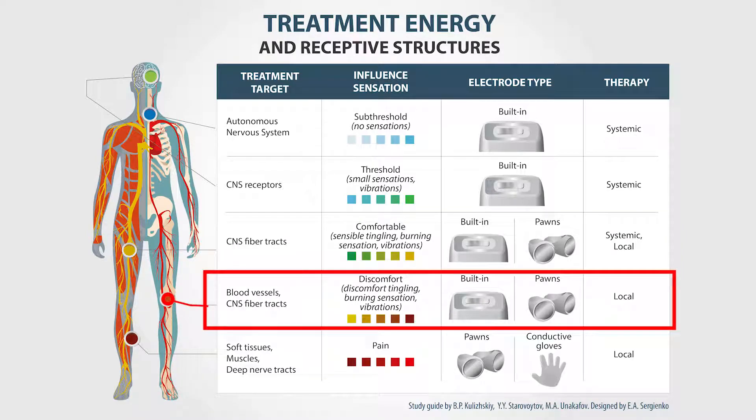When we continue to increase the treatment energy, the scanner device begins to focus on the blood vessels and all types of nerves, which increases the effectiveness of anti-pain, anti-edemic, and trophic therapy, as well as joint treatment. Here, we mainly use external electrodes.